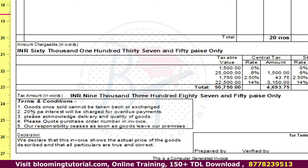In the terms and conditions: goods sold cannot be taken back or exchanged. The 20% per annum interest will be charged for overdue payments. Please acknowledge delivery and quality of goods, please quote purchase order number and invoice. Your invoice is the terms and conditions, so if you have any terms and conditions, you can edit it in the manuals.